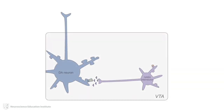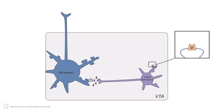Opioids exert their effects primarily through their agonist actions at mu opioid receptors. Mu opioid receptors are densely located in brain areas modulating pain and reward, such as the ventral tegmental area, or VTA. Stimulation of mu opioid receptors results in decreased release of GABA, coinciding with increased levels of dopamine in the nucleus accumbens. Prolonged use of opioids also results in modulation of norepinephrine.